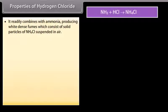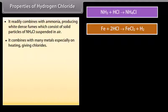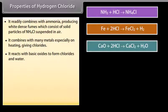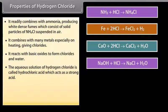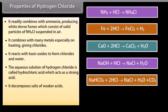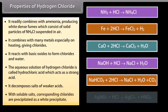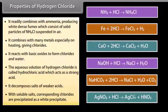Properties of hydrogen chloride: It readily combines with ammonia, producing white dense fumes consisting of solid particles of NH₄Cl suspended in air. It combines with many metals, especially on heating, giving chlorides. It reacts with basic oxides to form chlorides and water. The aqueous solution of hydrogen chloride is called hydrochloric acid, which acts as a strong acid. It decomposes salts of weaker acids; with soluble salts, corresponding chlorides are precipitated as a white precipitate.